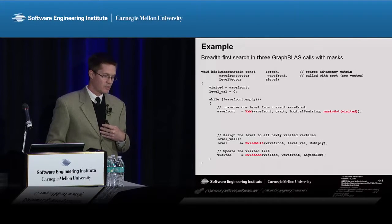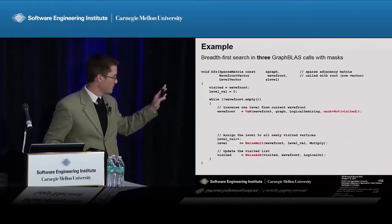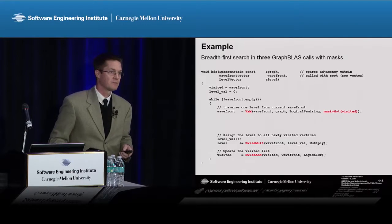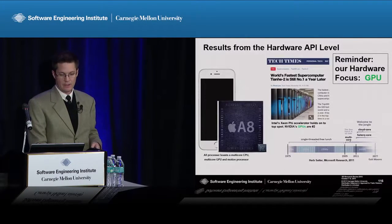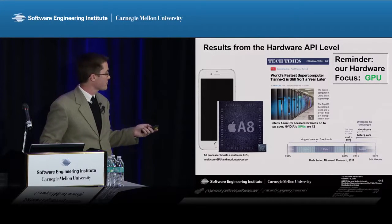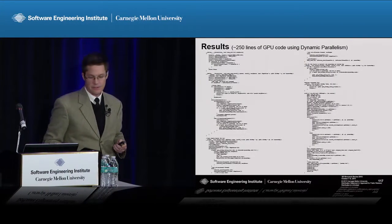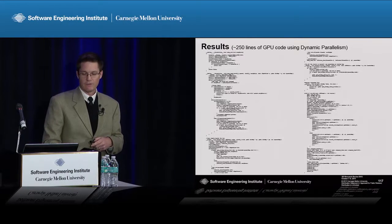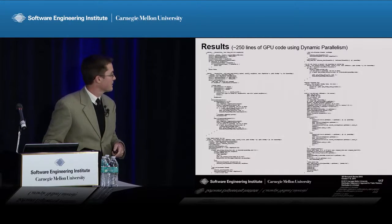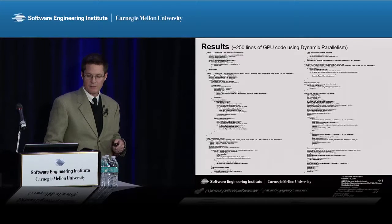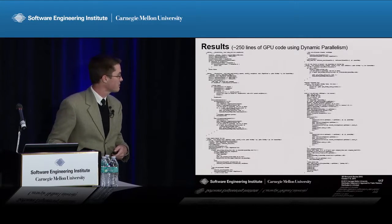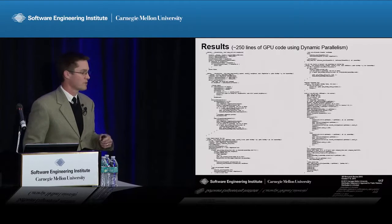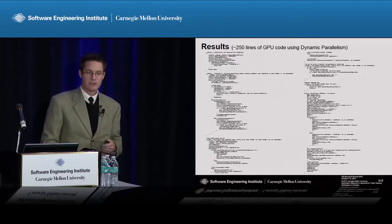There's an argument about whether you want more atomic RISC-like operations or more complex instruction set types. Hardware vendors and compiler developers will have something to say in this area. Our GPU implementation uses a new capability in NVIDIA hardware called dynamic parallelism, and we're able to implement breadth-first search using a compressed sparse row data structure in 250 lines of code.